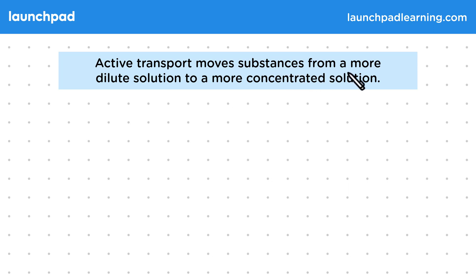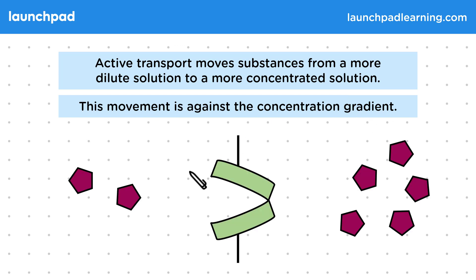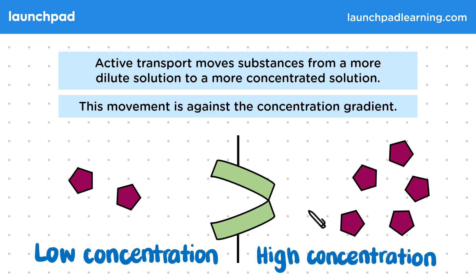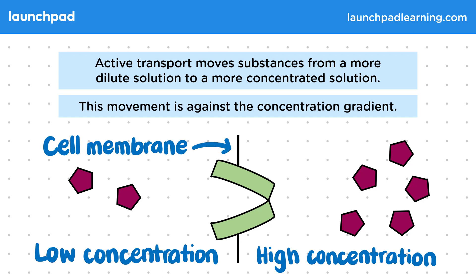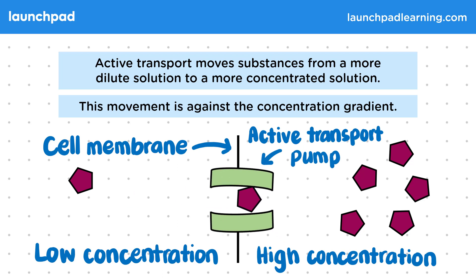Active transport moves substances from a more dilute solution to a more concentrated solution. This movement is against the concentration gradient. On one side of the diagram is an example of a low concentration substance, and on the other side is a high concentration substance. These two are separated by a cell membrane running through the middle, and sitting within the cell membrane is an active transport pump. This pump uses energy to move molecules against or up their concentration gradient.